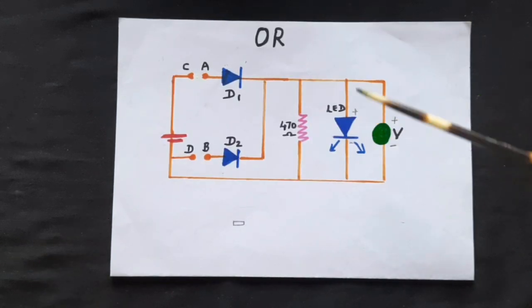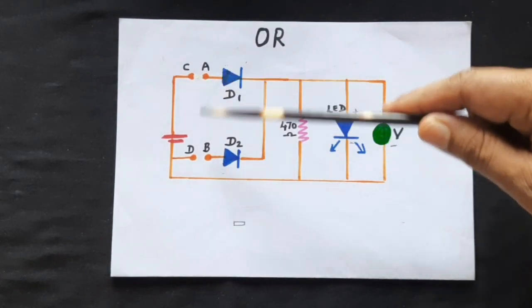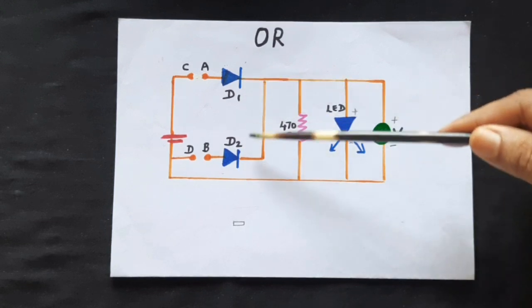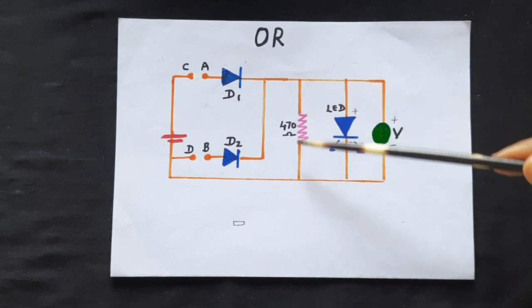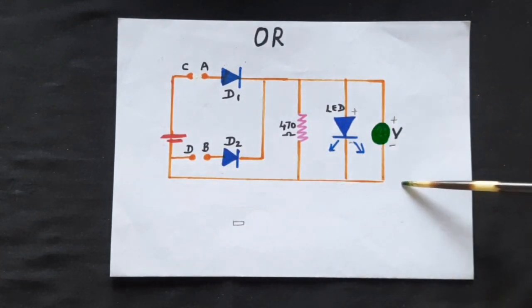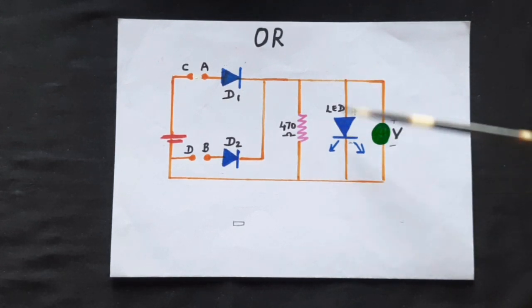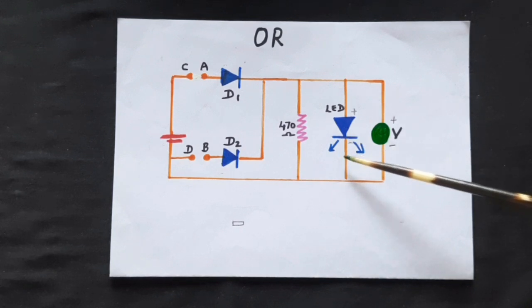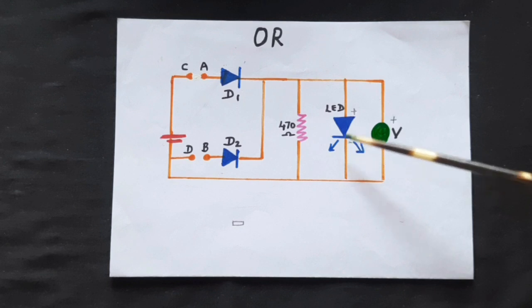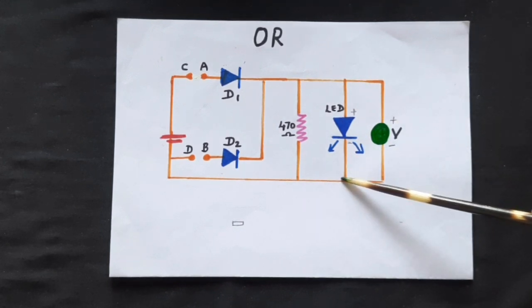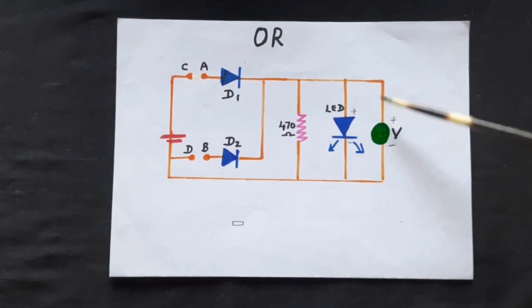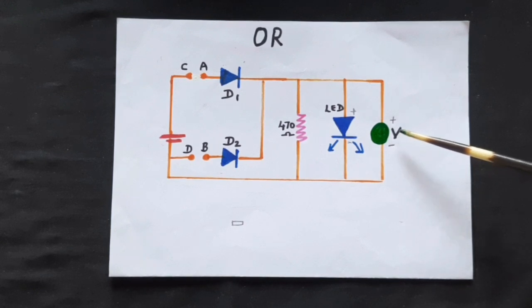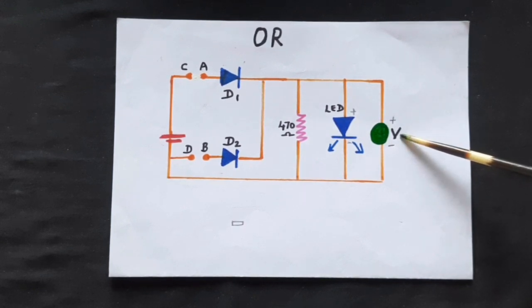Coming to the circuit, A and B are the two input terminals. We have connected two diodes, D1 and D2. The negatives of the two diodes are connected together, and a 470 ohm resistor is connected from this point to the negative path. The output is measured across this point. We have connected an LED as an output device — if the output is high the LED will glow, and if the output is low the LED will not glow. It is also possible to connect a voltmeter and directly measure the voltage output: high voltage means on state, low voltage means off state.